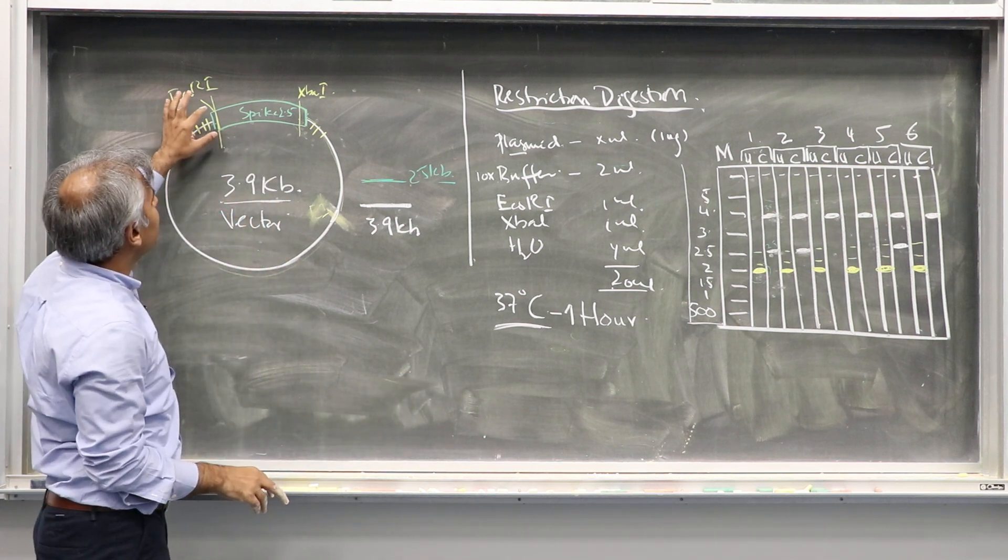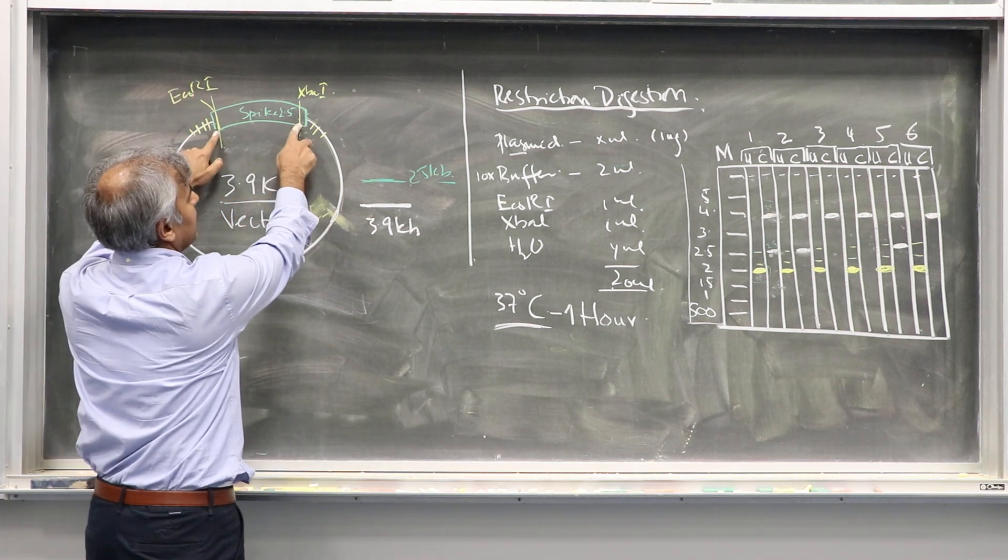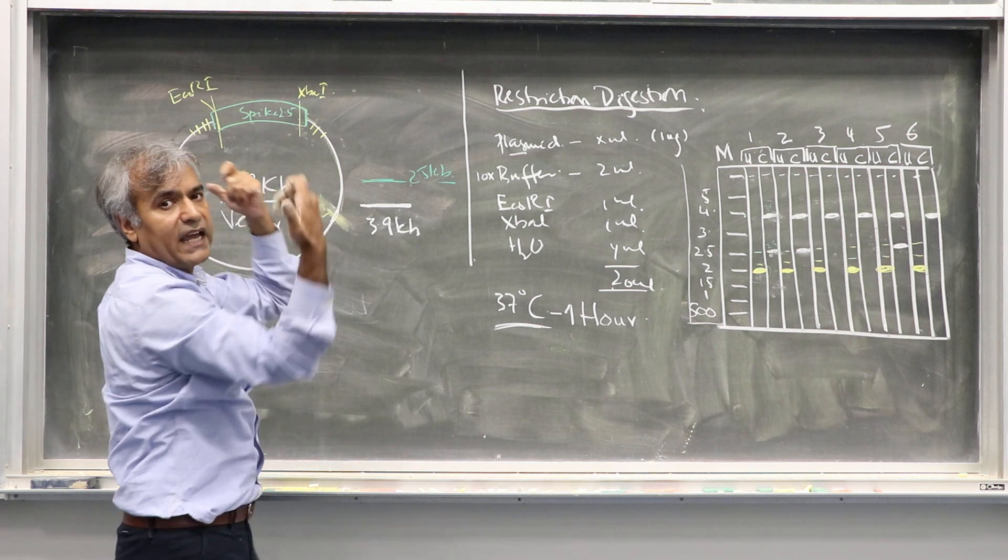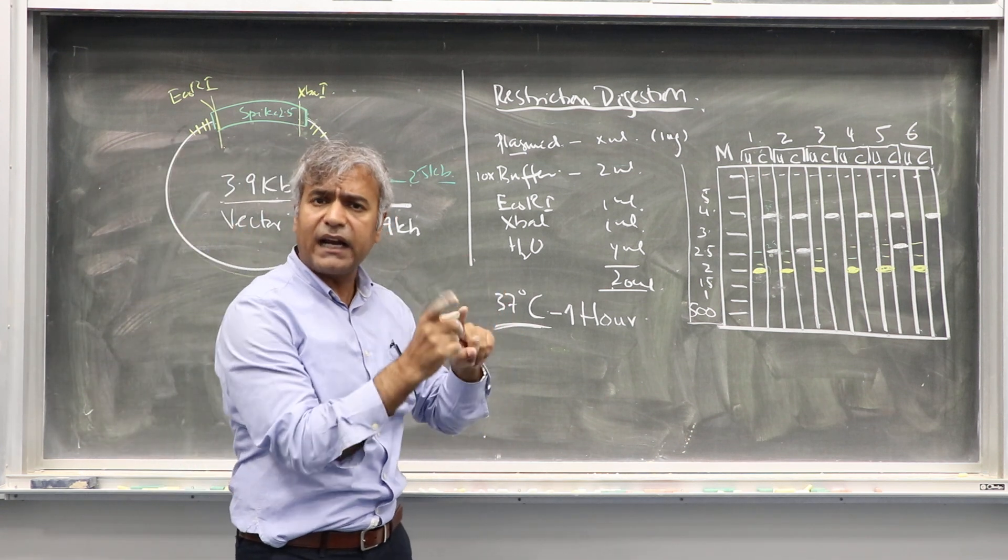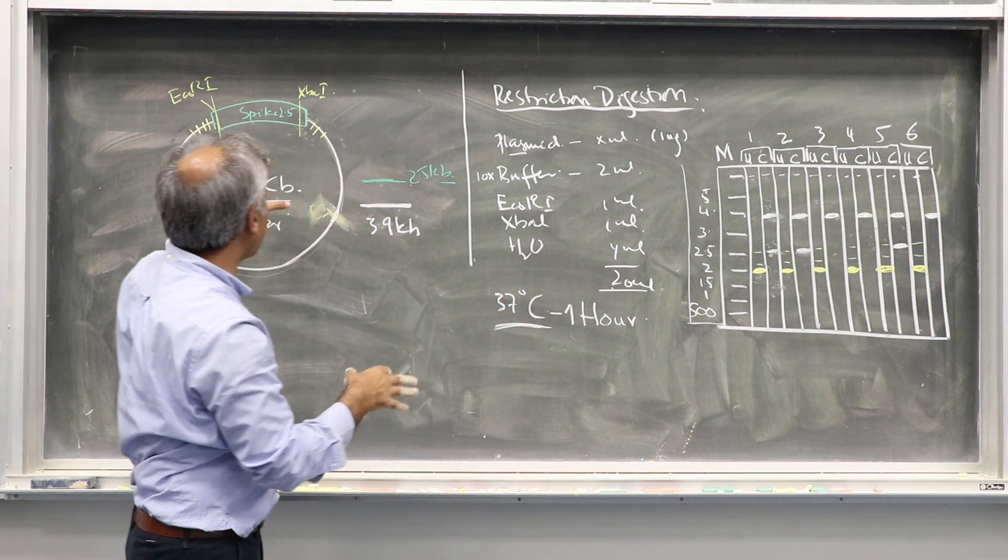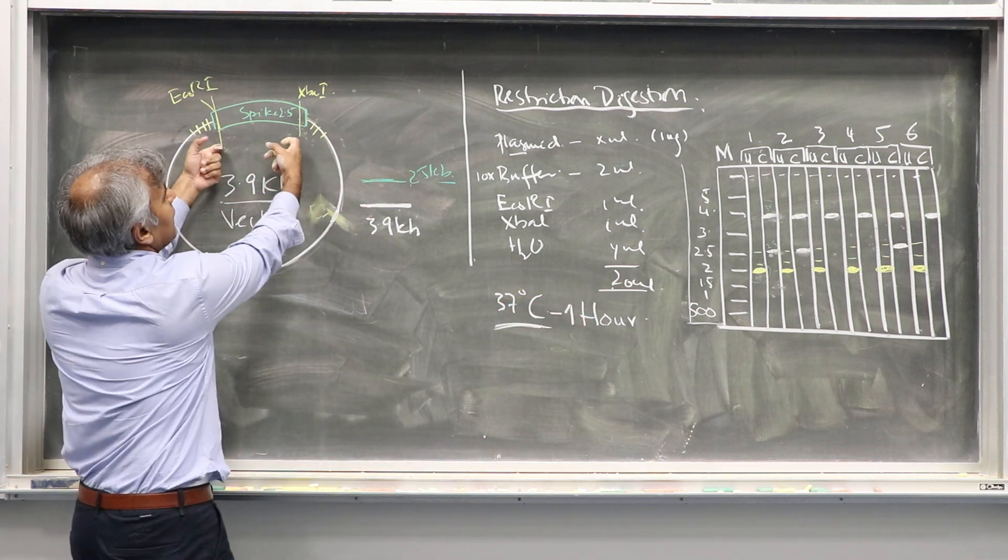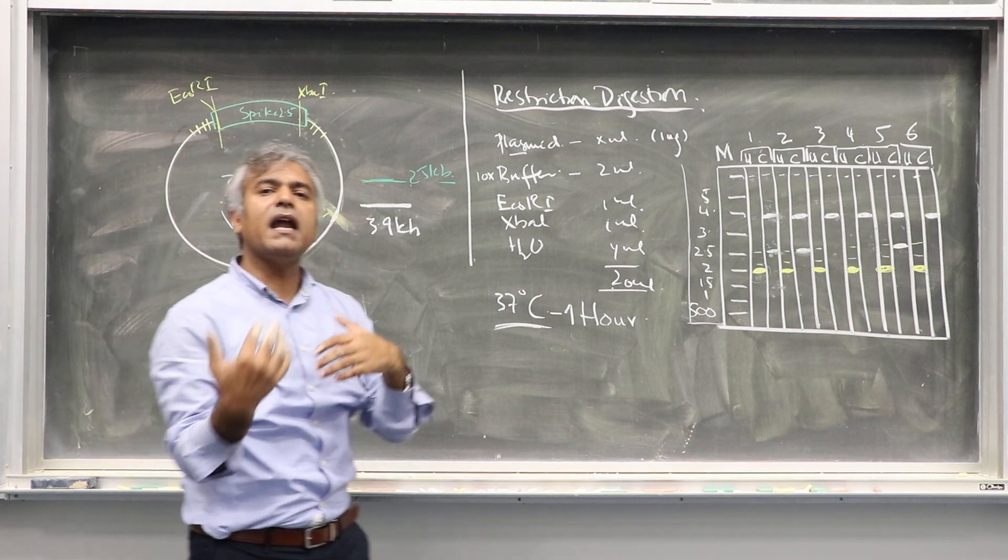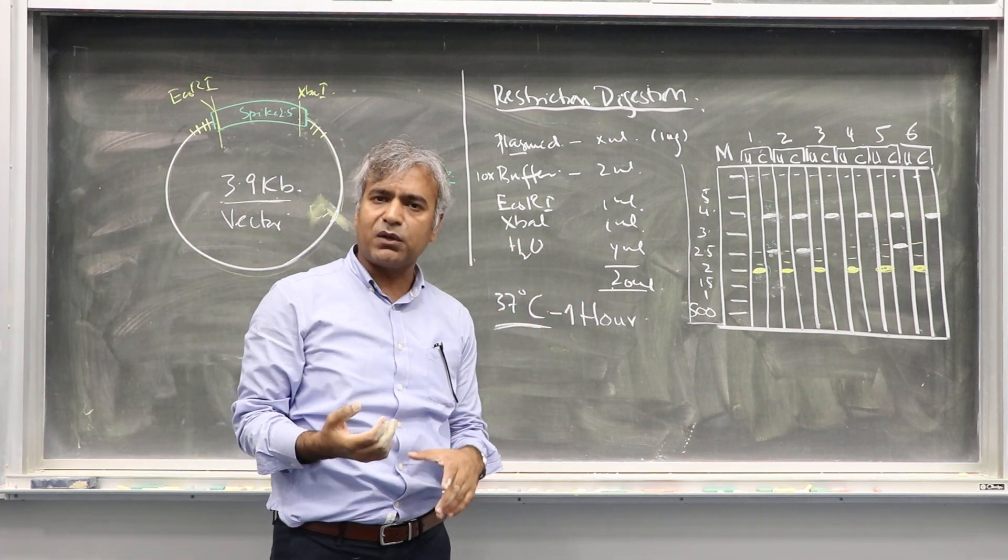What we do next is we now digest this one with ECOR1 and XPA1. We could have done this directly into bacterial expression vector as well, but this is how I prefer. So, we take ECOR1, XPA1.